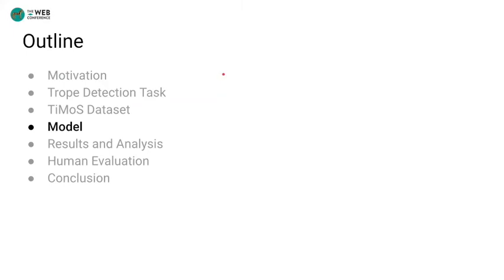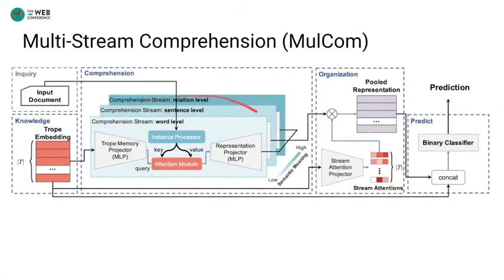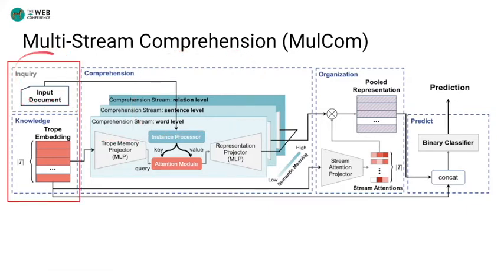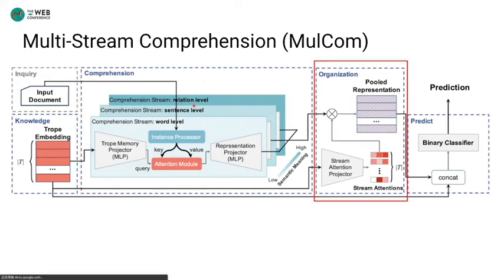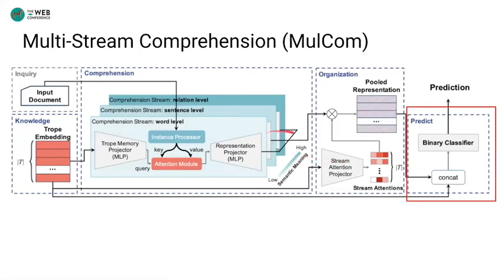Next, we will introduce our proposed model. To tackle the trope detection task, we design a multi-stream comprehension network. The inquiry module encodes the movie synopsis, and the knowledge module embeds the trope to learn the semantics of each trope. The comprehension module then integrates trope knowledge and movie inquiry on different semantic levels — we use word, sentence, and relation level streams to capture different level signals. The organization module fuses different level semantics by attending streams according to the given tropes. Finally, the pooled representation is concatenated with each trope embedding and passed to a binary classifier to predict the trope.